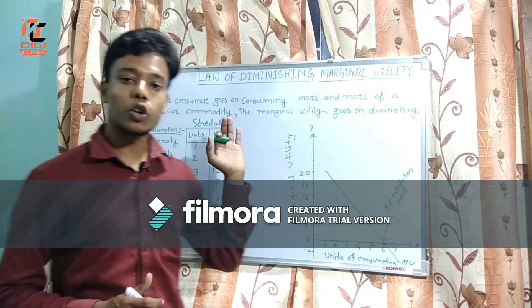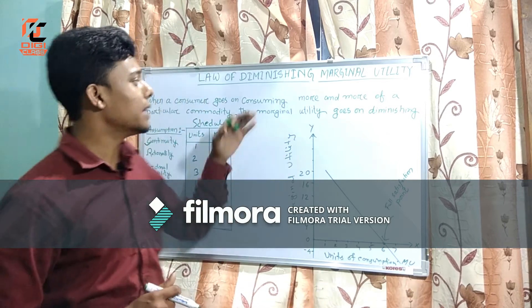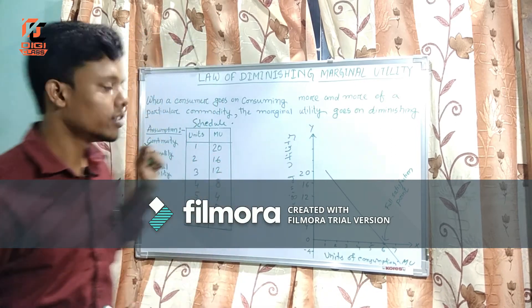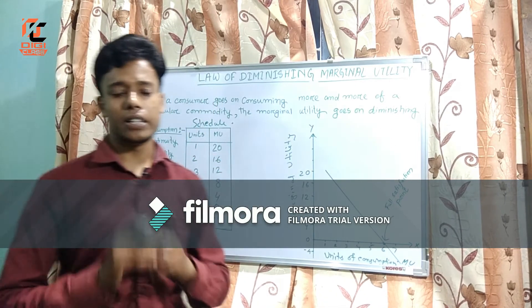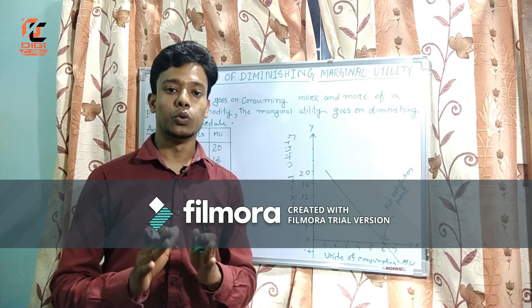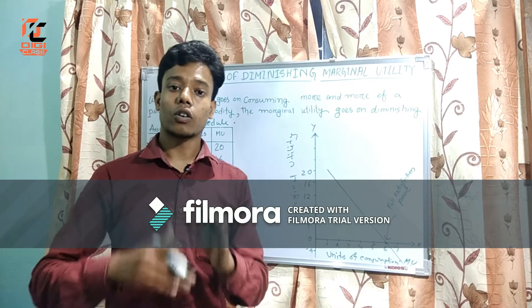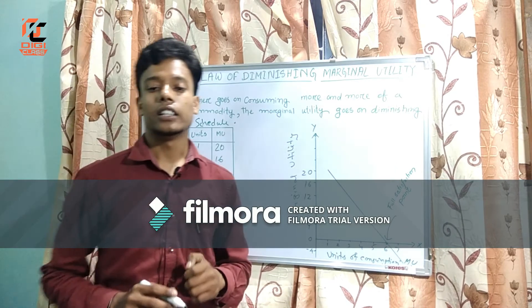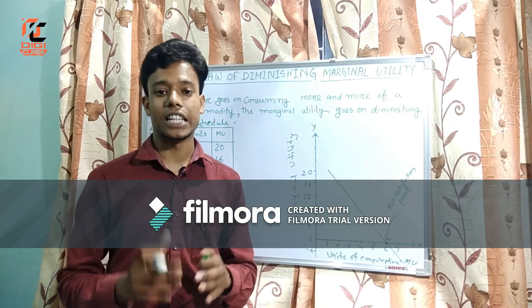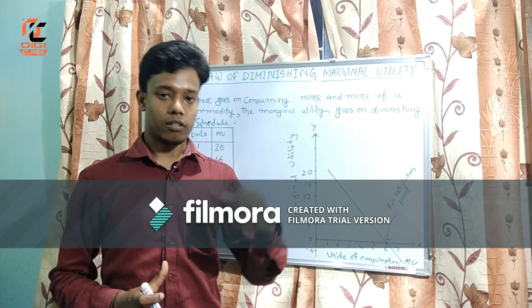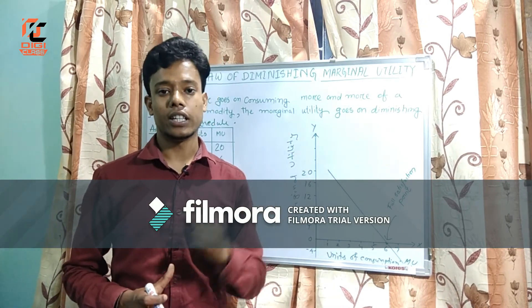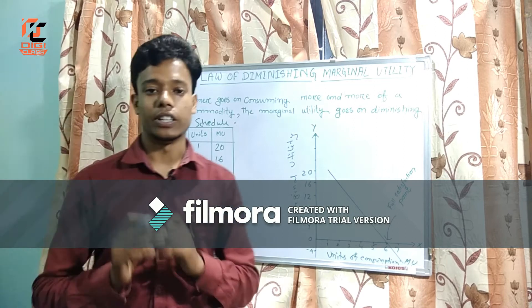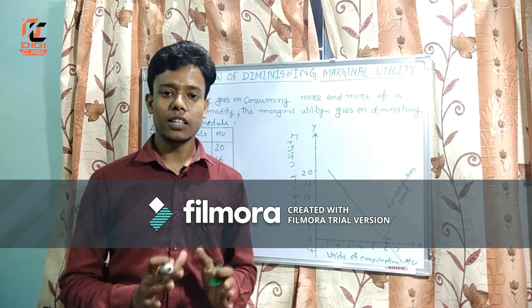Every economic theory has some assumptions. For the applicability of the Law of Diminishing Marginal Utility there are also some assumptions. The first is continuity — the consumer must consume the particular commodity continuously. The second is rationality — the consumer has the knowledge of whether they are gaining or losing satisfaction by consuming the same commodity. The third is cardinal utility — utility should be measurable in a quantitative manner.